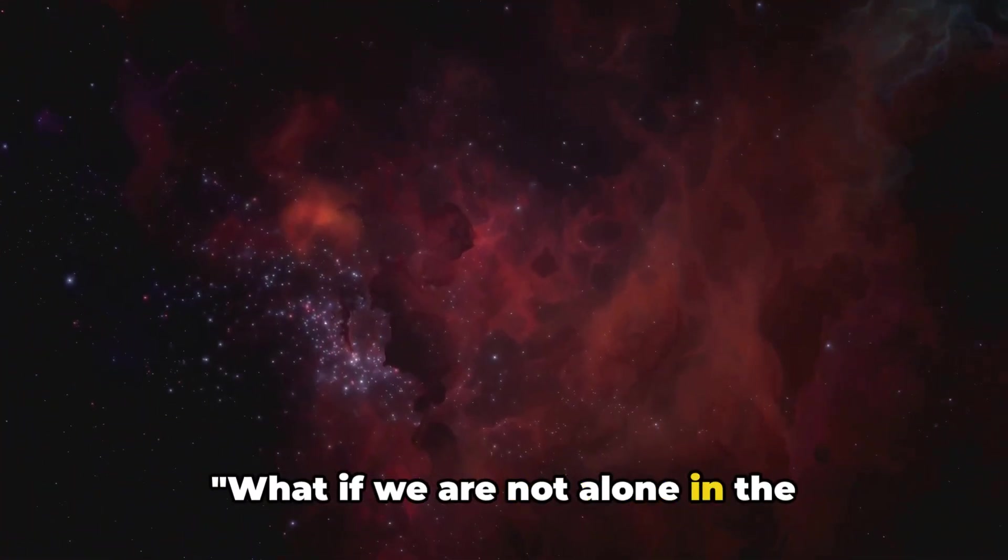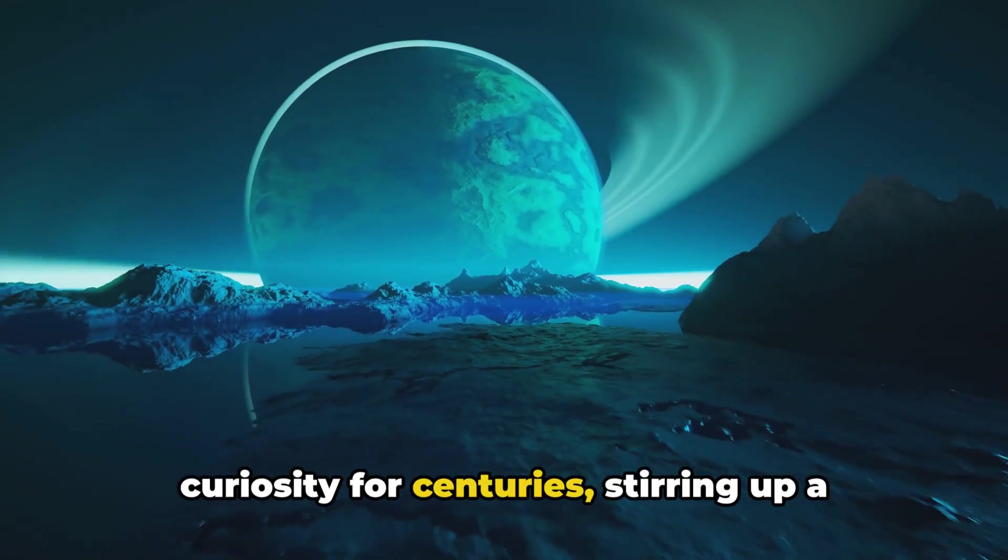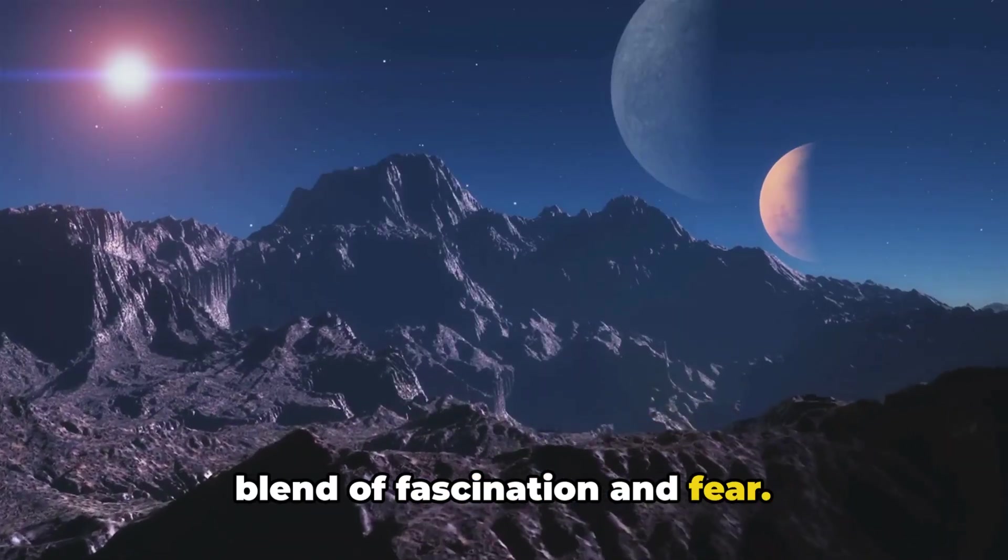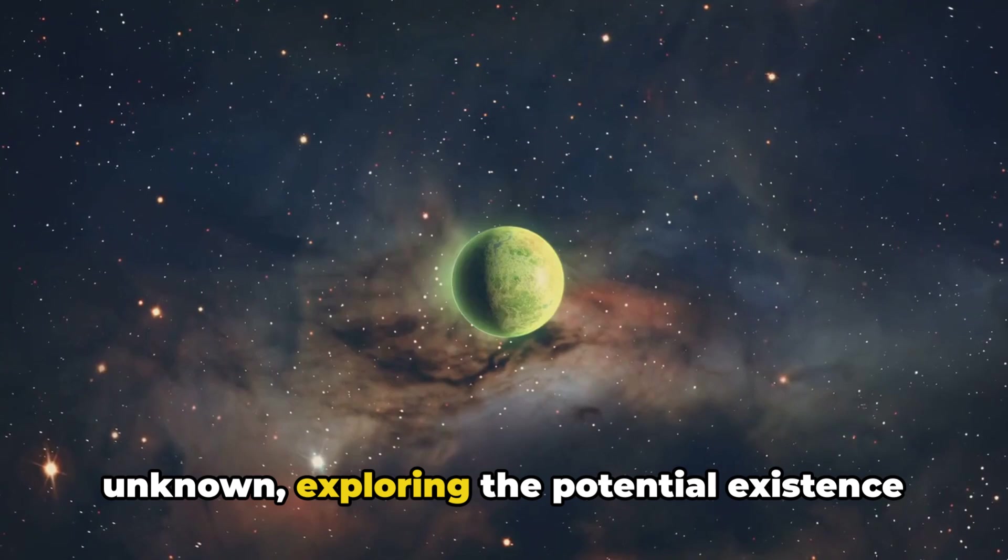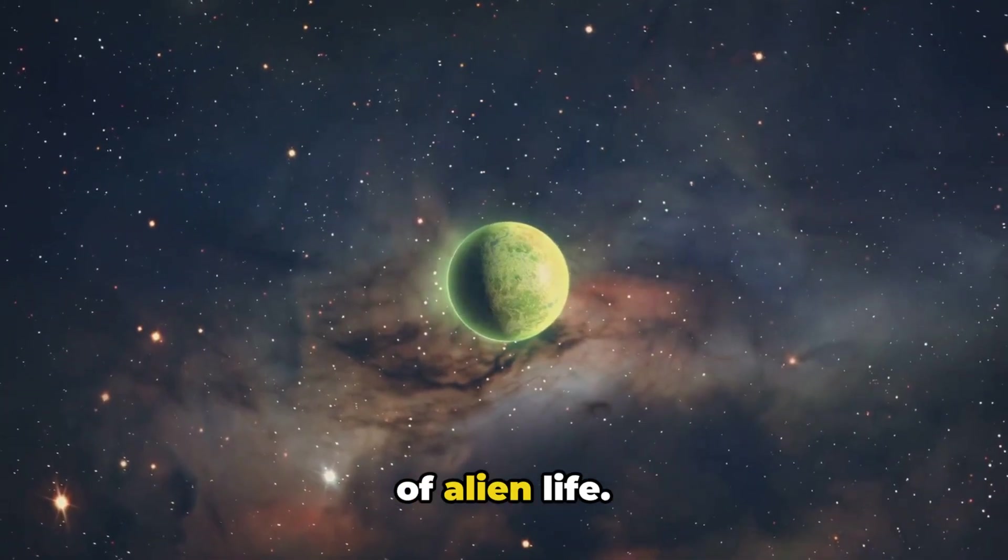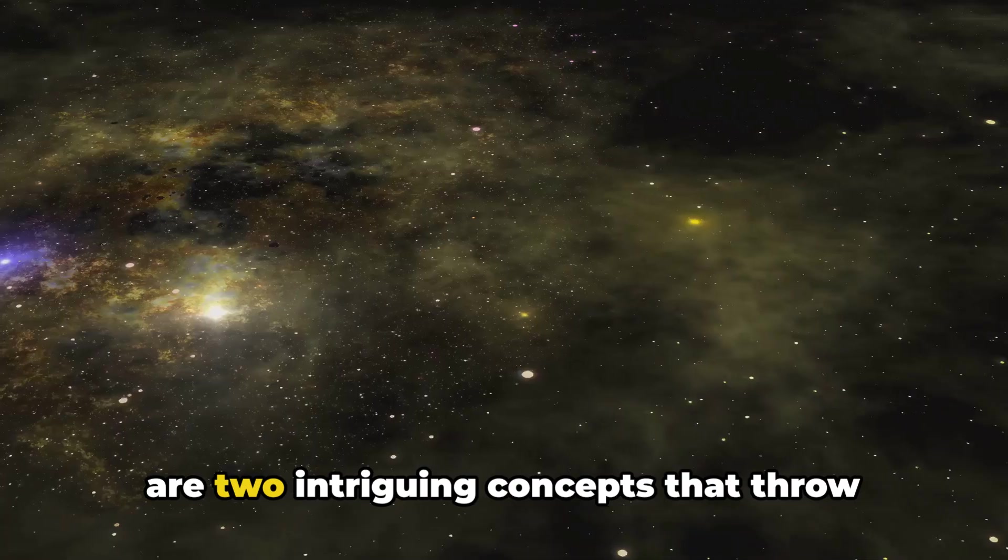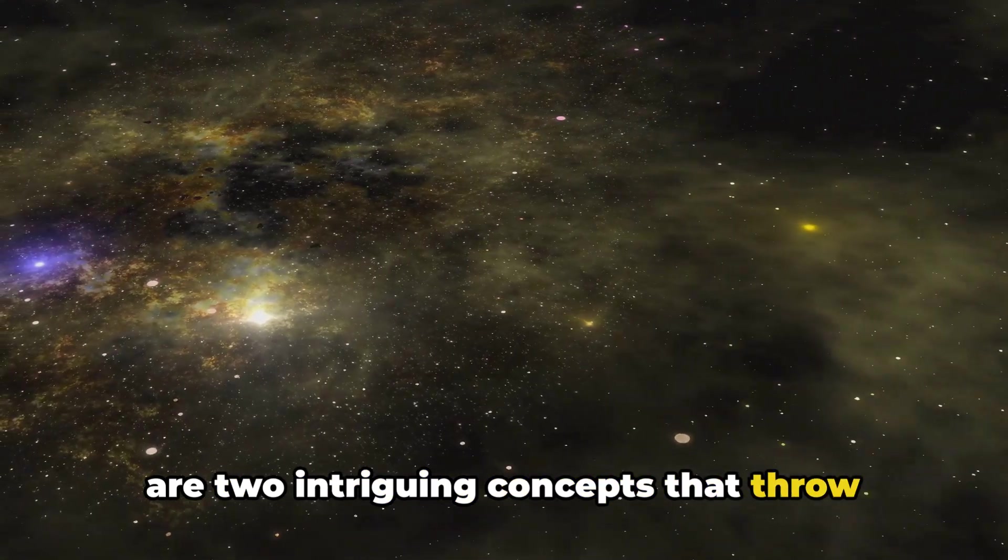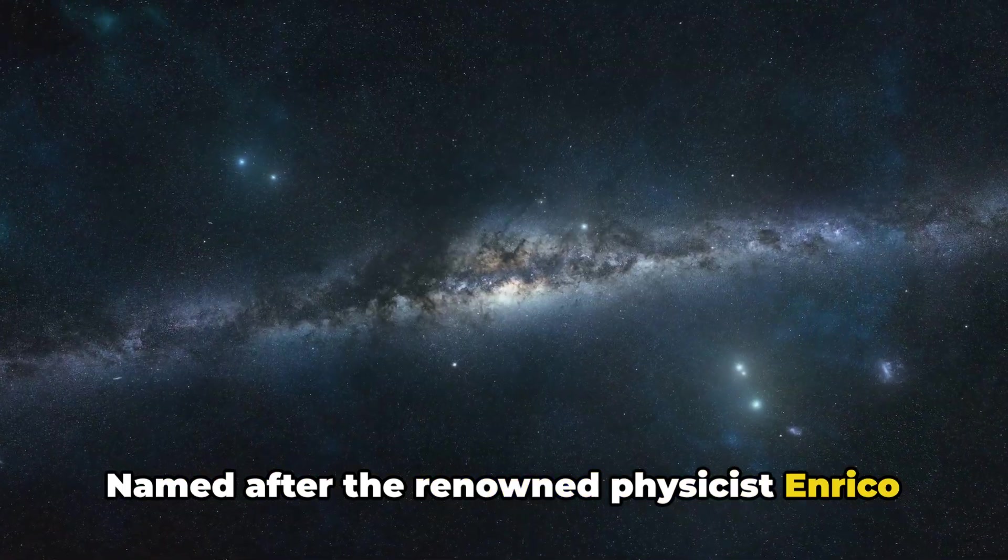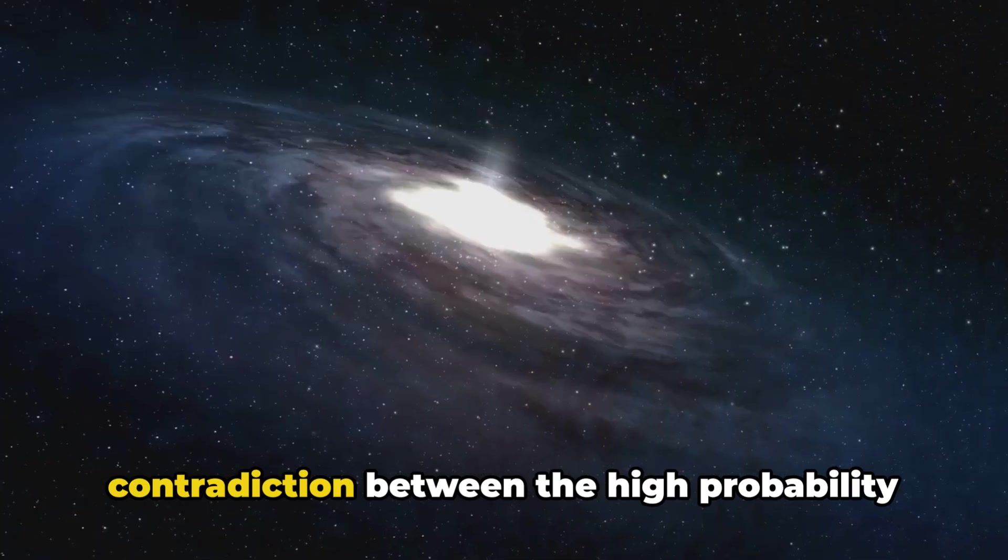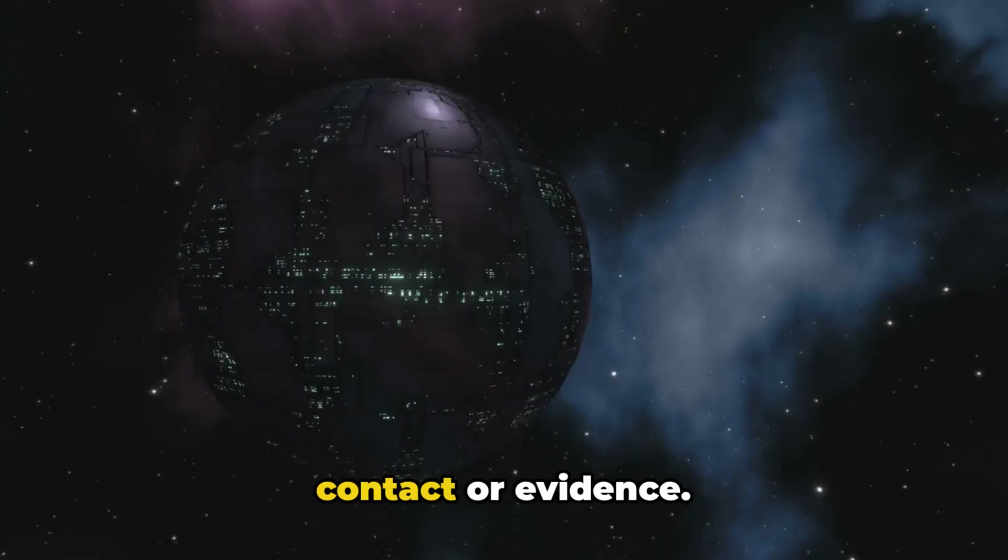What if we are not alone in the universe? A question that has piqued our curiosity for centuries, stirring up a blend of fascination and fear. Let's delve into this abyss of the unknown, exploring the potential existence of alien life. The Fermi Paradox and the Drake Equation are two intriguing concepts that throw light on this enigma. Named after the renowned physicist Enrico Fermi, the Fermi Paradox poses a contradiction between the high probability of extraterrestrial life and the lack of contact or evidence.